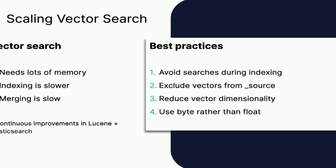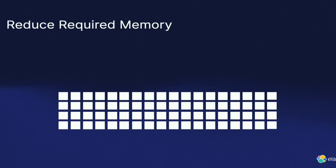Some best practices: avoid searches during heavy indexing if you can. There's a cool feature in Elasticsearch called aliases — basically a pointer to a concrete index. In production you serve from one index, while you create a new index on another machine, complete your indexing session, then just switch the alias. Also, exclude vectors from the _source — I'll show that in a moment.